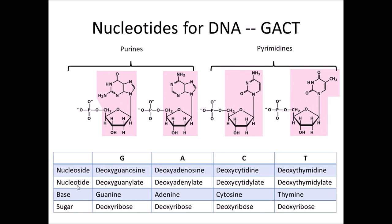There are different names for different parts of these structures. The nucleoside is this part in pink here — that's without the phosphate. A nucleotide is when it has one phosphate or more on this five prime position.